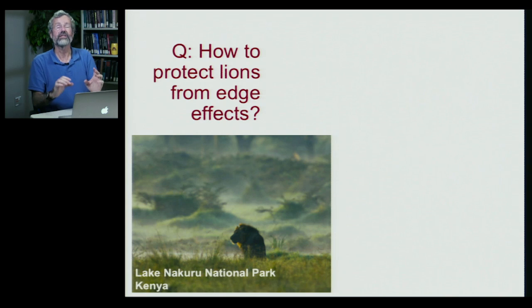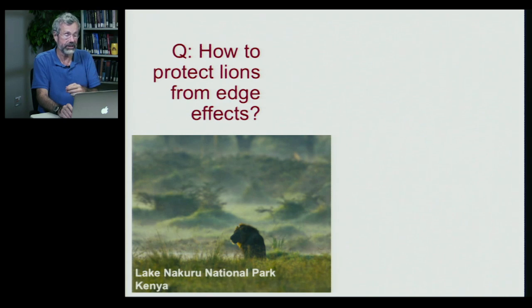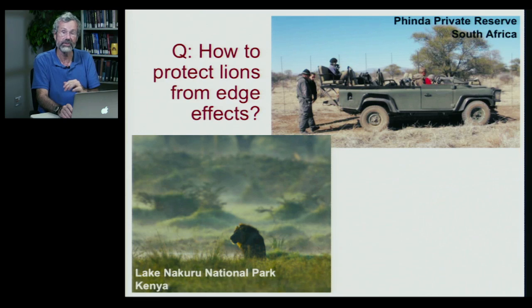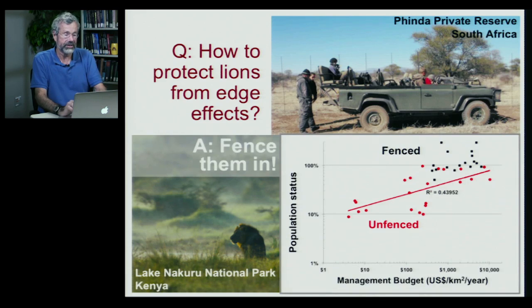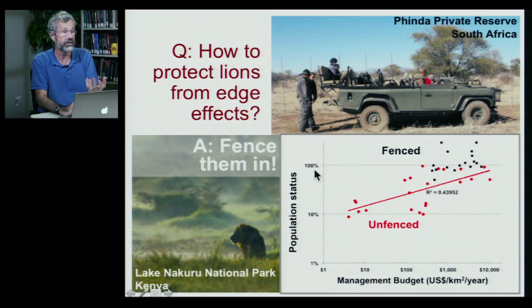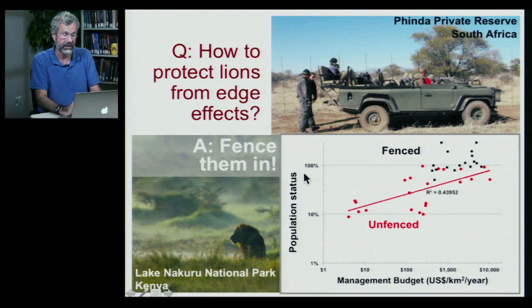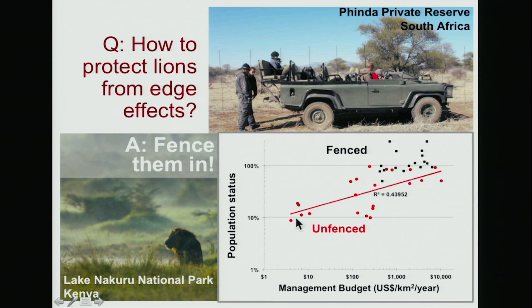So lions are sensitive to edge effects — but how can they be protected? There are certain parks in Africa where lions don't suffer retaliatory killings because they don't cause problems in the first place. We see this at Lake Nakuru National Park in Kenya and at parks in South Africa like Penda Private Reserve. If the lions are safely fenced in, they don't get into trouble and their populations are quite healthy. There's a clear difference between fenced parks and unfenced parks in terms of how well the lion population is doing.